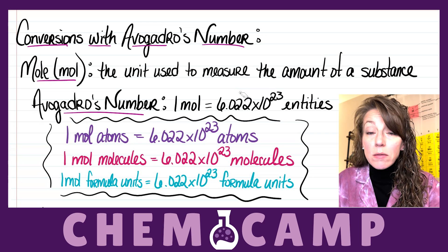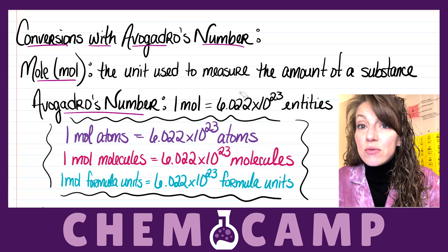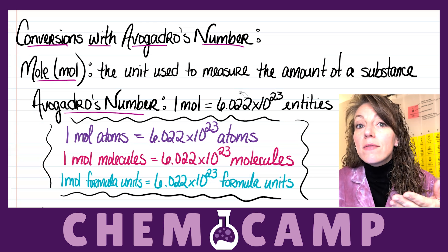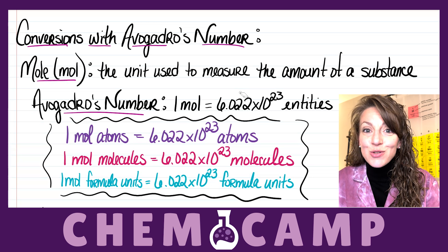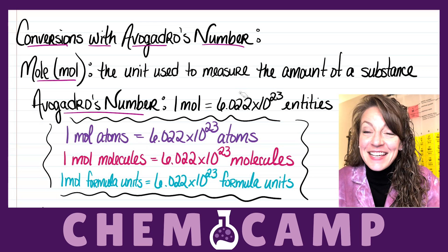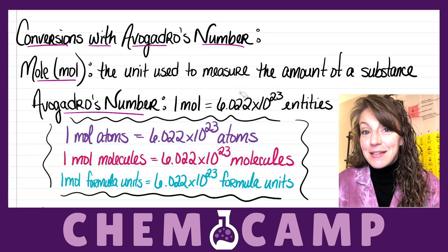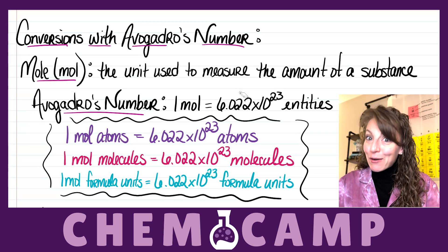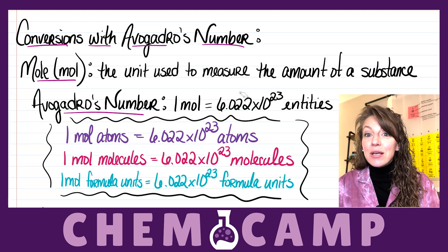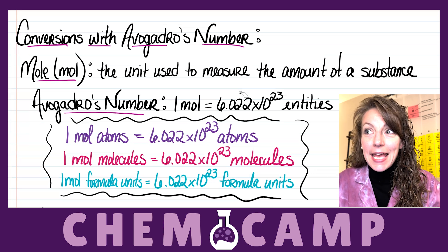Avogadro's number is going to allow us to relate the mole to a count. For example, one mole of anything you want to measure is going to equal 6.022 times 10 to the 23rd of those things. So if I have one mole of chemistry textbooks, I have 6.022×10²³ chemistry textbooks. One mole of dollar bills gives 6.022×10²³ dollar bills, and one mole of sand would be 6.022×10²³ individual grains of sand.